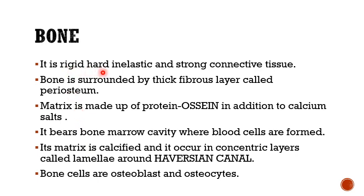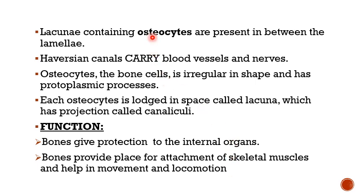Bone is a rigid, hard, inelastic, and strong connective tissue. It is surrounded by a thick fibrous layer called periosteum. The matrix is made up of protein ossein in addition to calcium salts, which make it hard. It bears a bone marrow cavity where blood cells are formed. The matrix is classified as calcified due to the presence of calcium and occurs in concentric layers called lamellae around the Haversian canal. Bone cells are called osteoblasts when immature and osteocytes when mature.